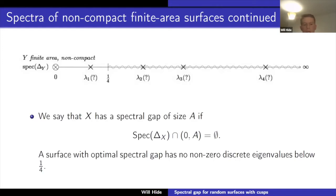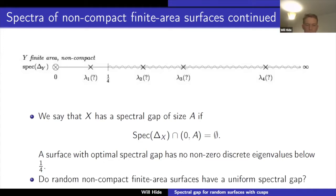We say that the surface has a spectral gap of size A if the spectrum between zero and A is empty. In the context of finite area hyperbolic surfaces, a surface with optimal spectral gap has no discrete eigenvalues below one quarter. We are interested in the following questions: do random non-compact finite area surfaces have a uniform spectral gap? Can this spectral gap be made explicit, and if so, how large can it be?